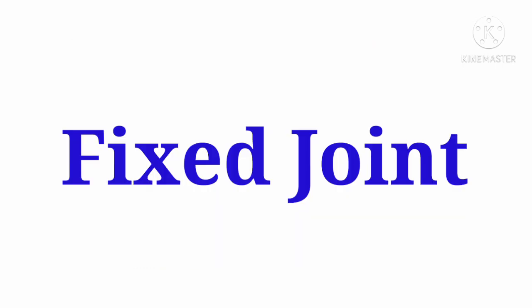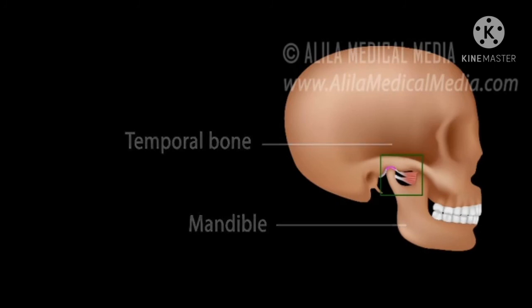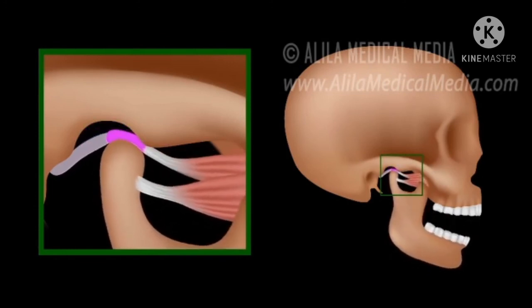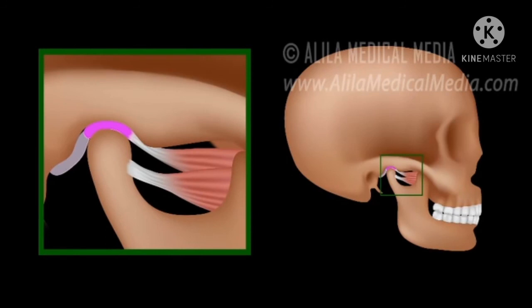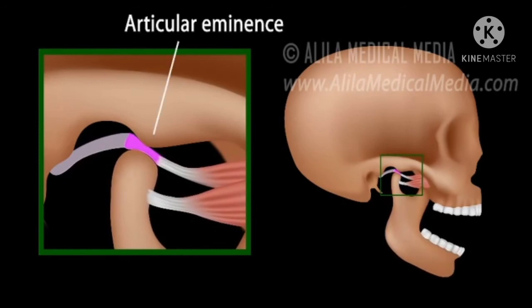Now let us study about fixed joints. Children, joints between the bones in our skull are different from those we have discussed so far. The bones cannot move at these joints, and such joints are called fixed joints. Only one bone in our entire skull can be moved, that is our lower jaw bone. When we open our mouth wide, we can move our lower jaw bone away from our head. Can we also move our upper jaw away from our head? No, because there is a fixed joint between the upper jaw and the rest of the head.